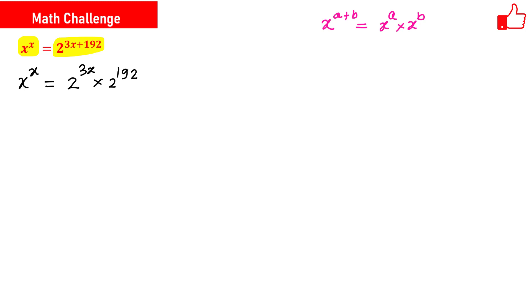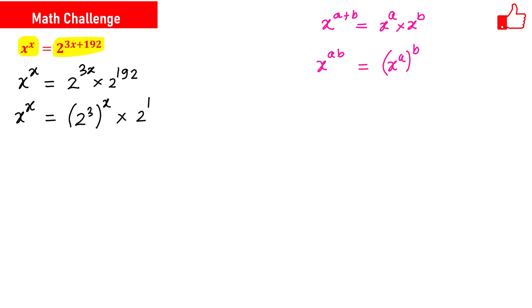Also, if we have x raised to the power a times b, this can be written as x raised to the power a, whole raised to the power b. Using this rule, x raised to the power x equals 2 raised to the power 3, whole raised to the power x, times 2 raised to the power 192. In the next step this gives x raised to the power x equals 8 raised to the power x times 2 raised to the power 192.